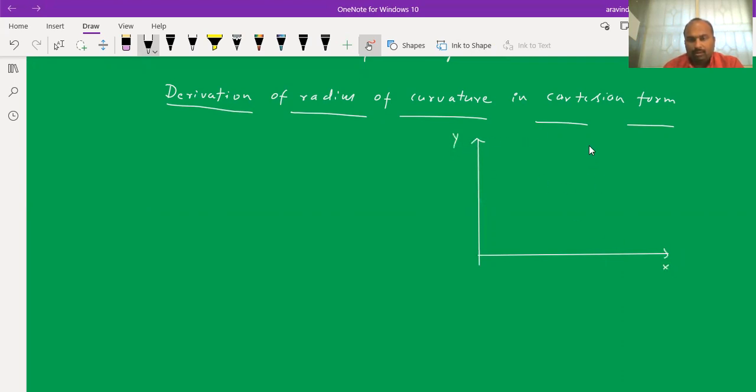You draw a curve and for the curve you draw a tangent. Here this point will be taken as P of x comma y and you mark this as A, and arc length is measured in terms of s. This is the angle psi and I will take the equation of the curve as y equals f of x.